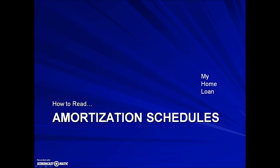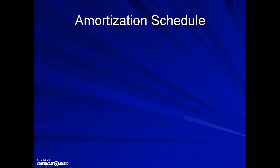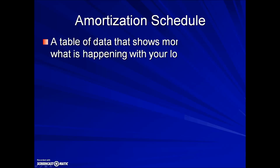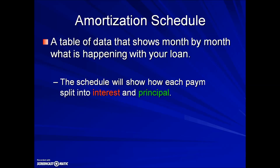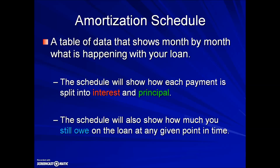Finance unit section 3: how to read an amortization schedule. An amortization schedule is a table of data that shows month by month what is happening with your loan. The schedule will show how each payment is split into interest and principal, and it will also show how much you still owe on the loan at any given time.